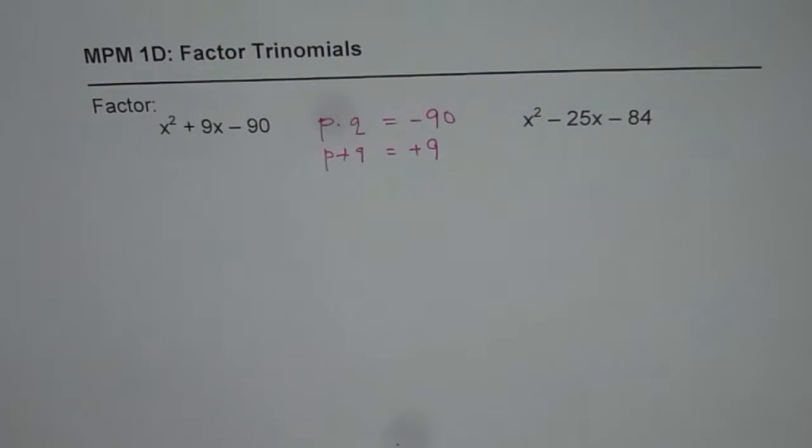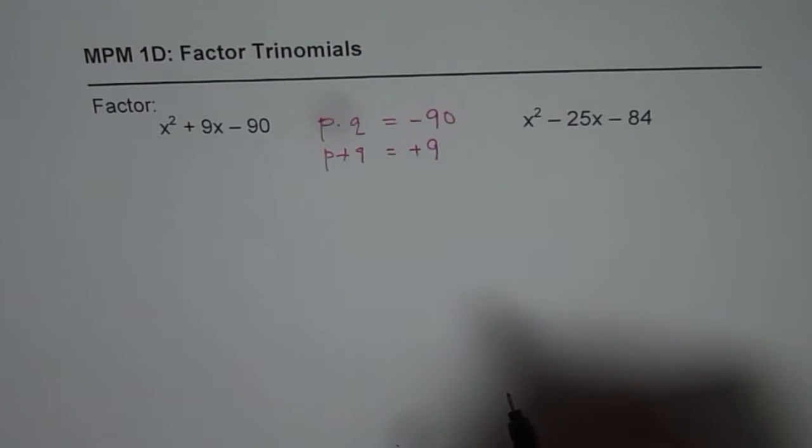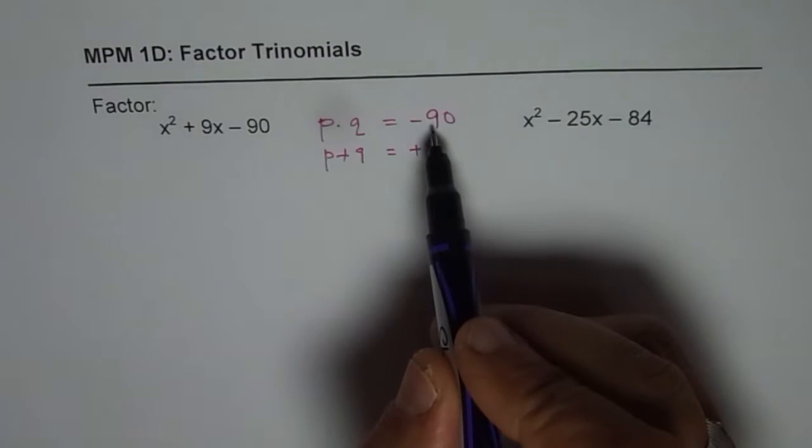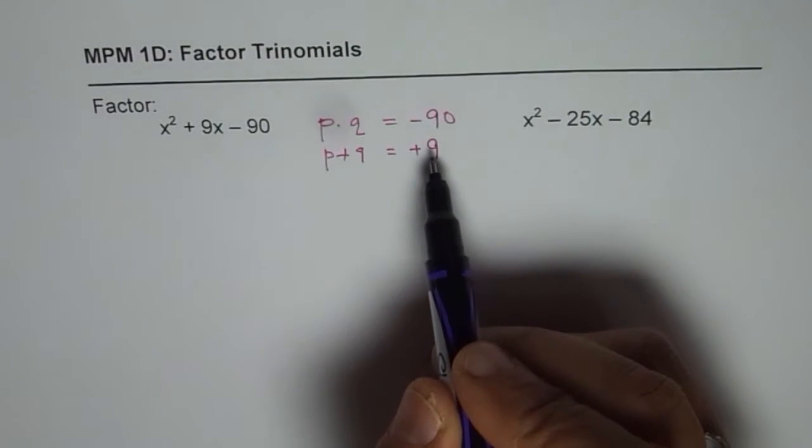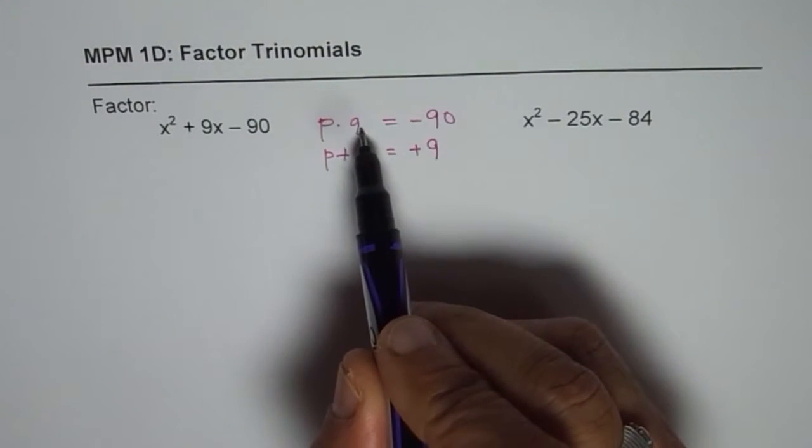Now what we are trying to understand here is what type of numbers to choose and from where to start. Negative 90 product means we have opposite signs of two numbers so p and q are of opposite sign.